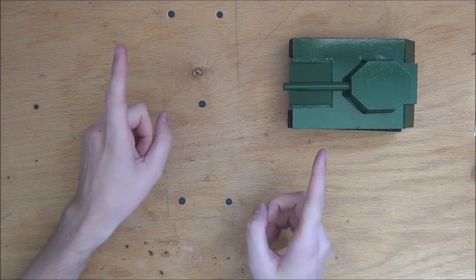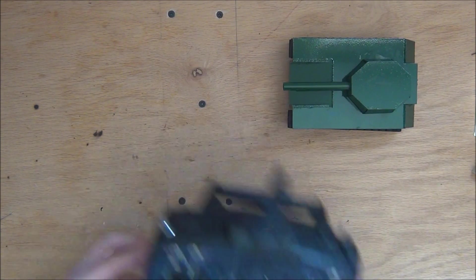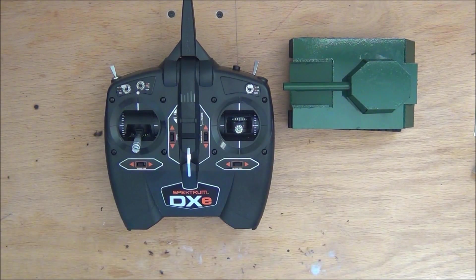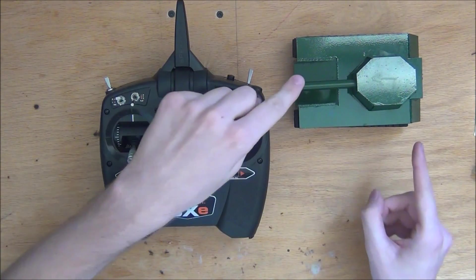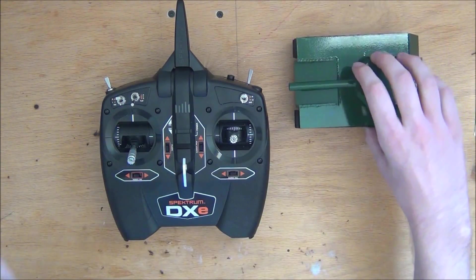And if you're wondering, I'm using the same transmitter that I did for my BattleBot, and that is a Spectrum DXE. Also, I'll leave the links for the servos I used and the Lego tank treads in the description below.